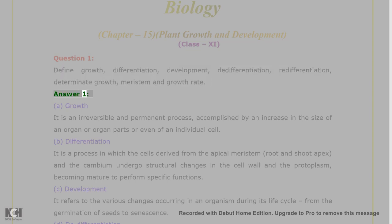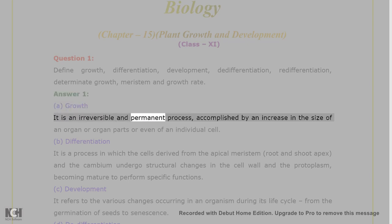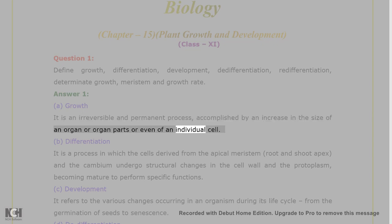Answer 1. A. Growth: it is an irreversible and permanent process, accomplished by an increase in the size of an organ or organ parts or even of an individual cell.